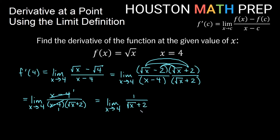This expression is well-behaved at x = 4 — no divide by zero. So we plug in: 1 over (√4 + 2) = 1 over (2 + 2) = 1 over 4. So f prime of 4 = 1/4.